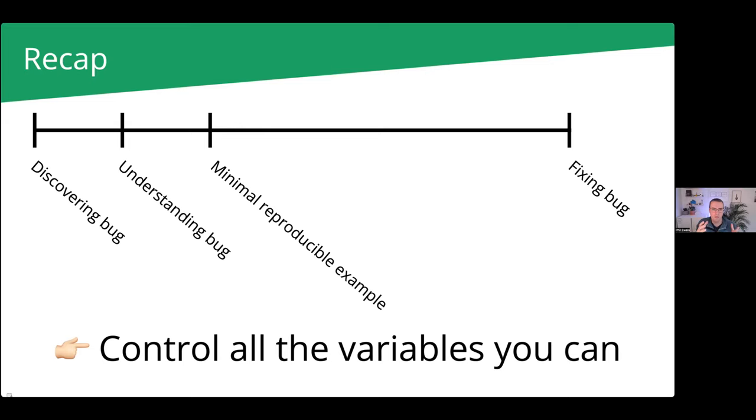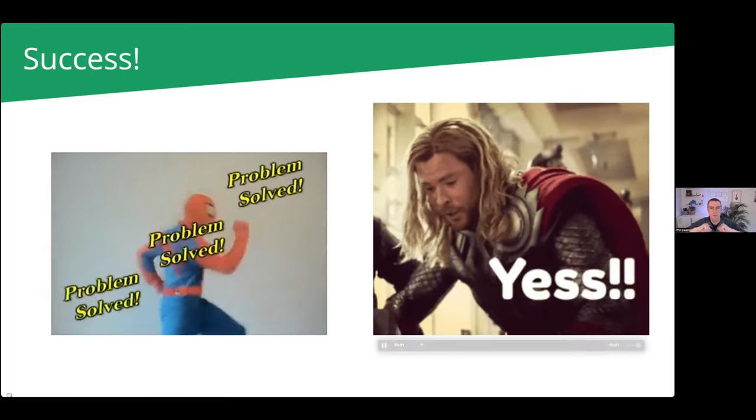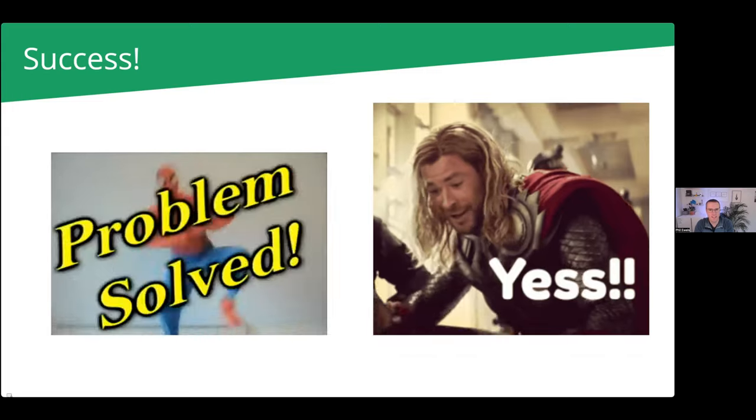And really the key for reproducible examples, the reason for doing it, the reason it works is that you're controlling all the variables you can. So you're using it as a kind of a fair test where you're just flipping one thing or making it as small and simple as possible. Hopefully at the end of all this, problem solved. Happy to take any questions. Thanks very much for listening.